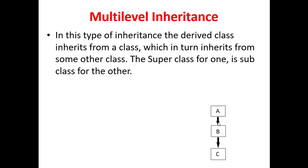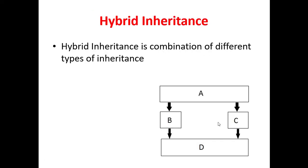The last one is hybrid inheritance. Hybrid inheritance is a combination of one or more types of inheritance. For example, class D is derived from classes B and C — that's multiple inheritance — and B and C are both derived from class A, which represents hierarchical inheritance. Combining two or more types of inheritance into a single structure is called hybrid inheritance.